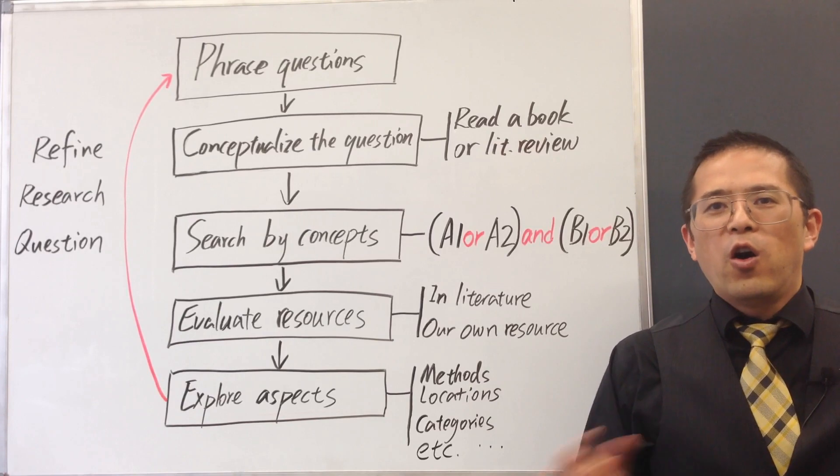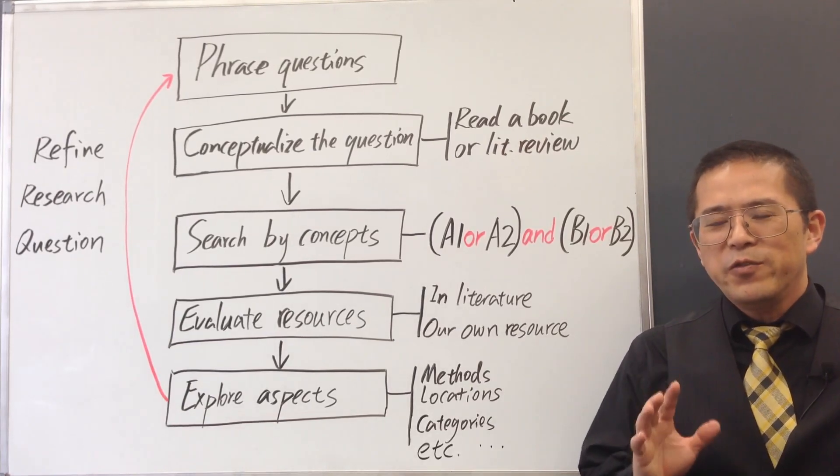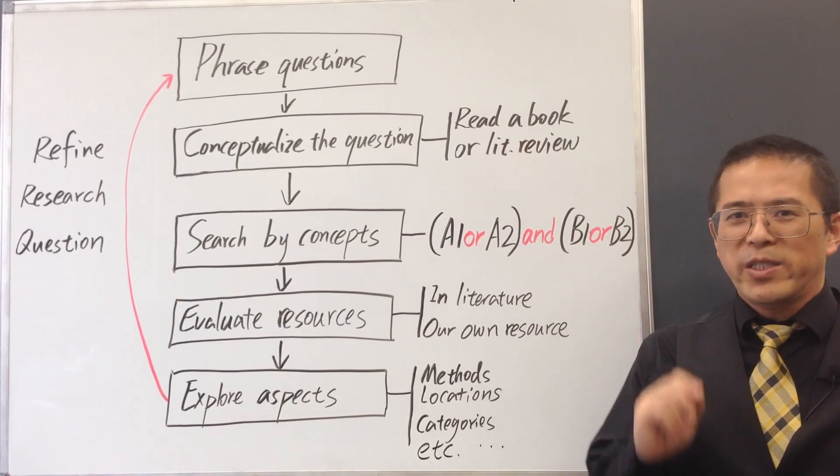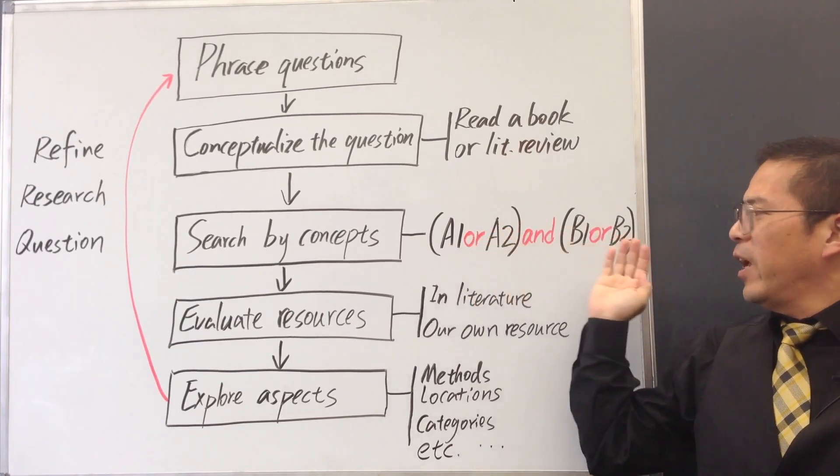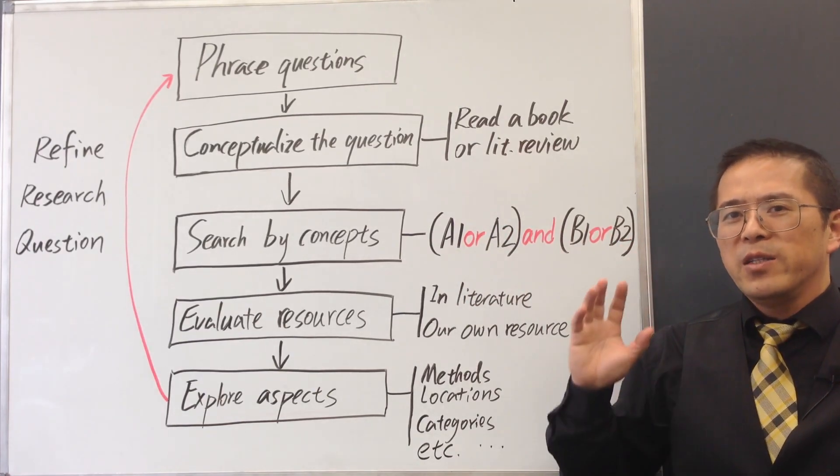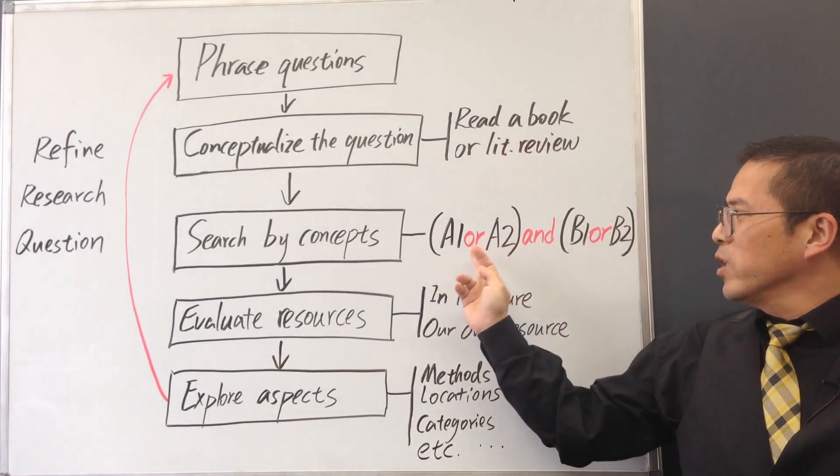We want to think of all the possible alternative terms for the key concepts in our topic and include all of them in our search. For example, if there are two key concepts in our topic, represented as A and B. In our search, we may combine the different terms for the same concepts using OR, and combine the two concepts using AND.